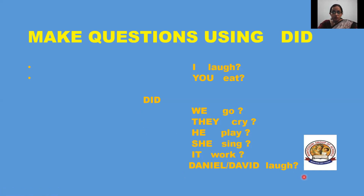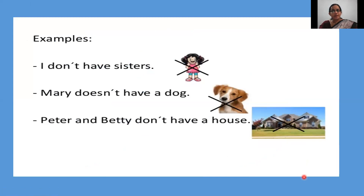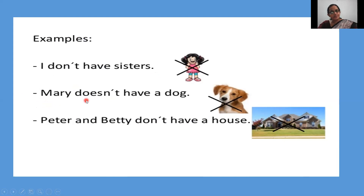So the usage of do, does and did is very important. All the time we require these words in our sentences. Now let us see some examples. I don't have sisters — never ever use I doesn't have sisters, that is wrong. Mary doesn't — with a singular person, use does. He does, doesn't. Mary doesn't have a dog. Peter and Betty don't have a house — two people, don't. So in this way we use do, does and did.